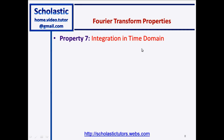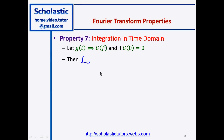Property number seven: integration in the time domain. Again, we have g(t) in the time domain and G(f) in the frequency domain, with G(0) = 0. If we integrate g(t) in the time domain — that is, the integral from minus infinity to t of g(τ) dτ — this will become in the frequency domain equal to 1/(j2πf) times G(f).